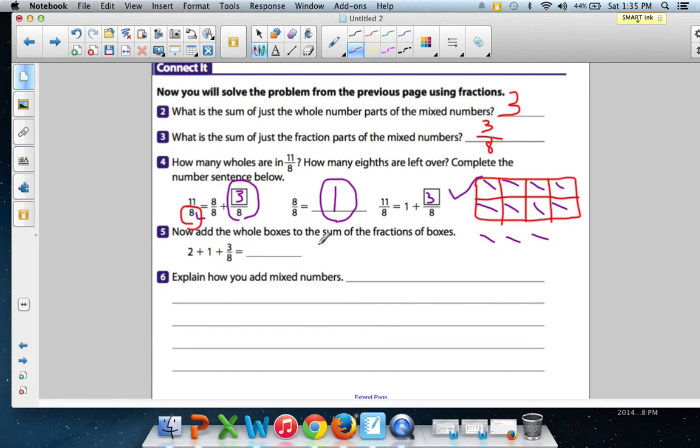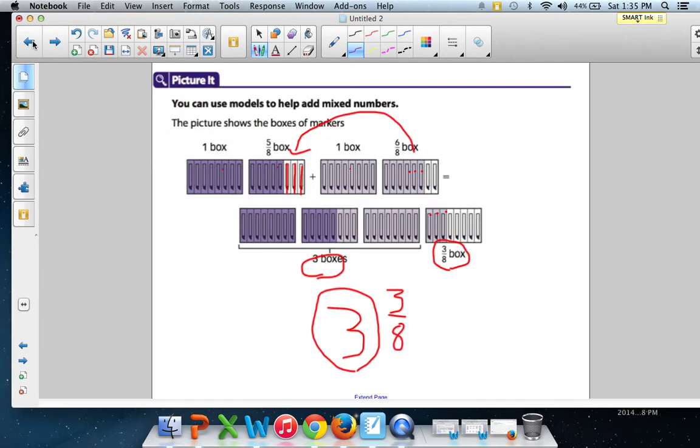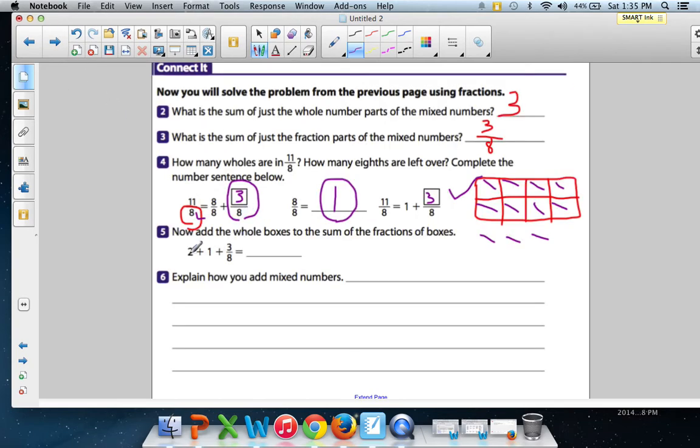Now add the whole boxes to the sum of the fractions of boxes. So all they're saying is, they're talking about the original problem, they're talking about all the holes and then the fractions at the end. What do you get? You get two plus one, which is three. No problem, you can do two plus one. And then what do I do with the fraction, Mr. Graham? Go ahead and add that two. So it's three and three-eighths. Explain how you add mixed numbers. Well, let's make it simple. Let's make it simple for ourselves, shall we?